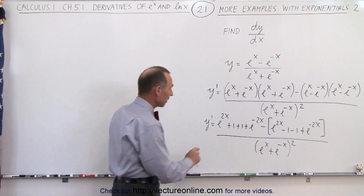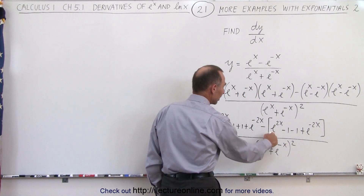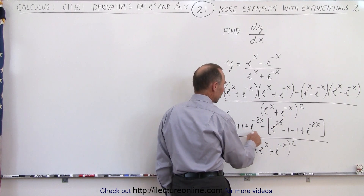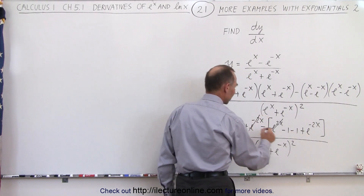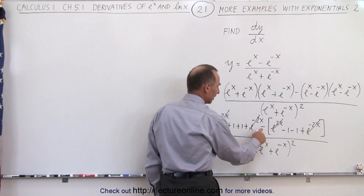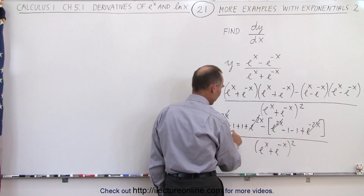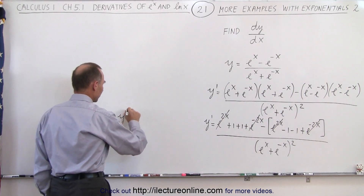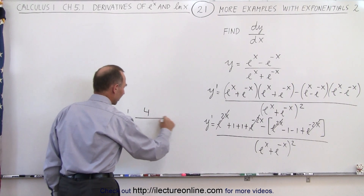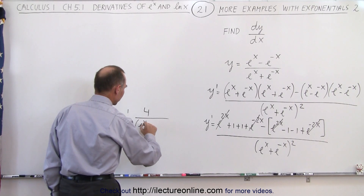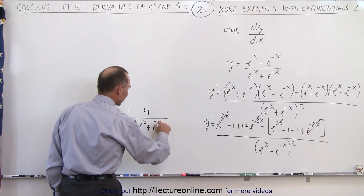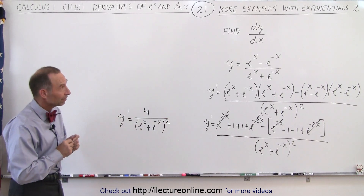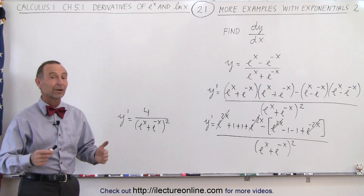Notice what happens: we have e²ˣ minus e²ˣ, so those cancel out, and e⁻²ˣ minus e⁻²ˣ cancels out too. The negative turns the remaining terms into positives, giving us 1 + 1 + 1 + 1 = 4. So y prime equals 4 divided by (eˣ + e⁻ˣ)², and that's the final answer for the derivative of our original problem.